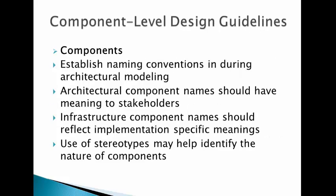Component-level design guidelines: first, establish naming conventions during architectural modeling. Architectural component names should be meaningful to stakeholders, and infrastructure component names should reflect implementation-specific meanings. Each name chosen must make sense and be useful to understand just by reading it.